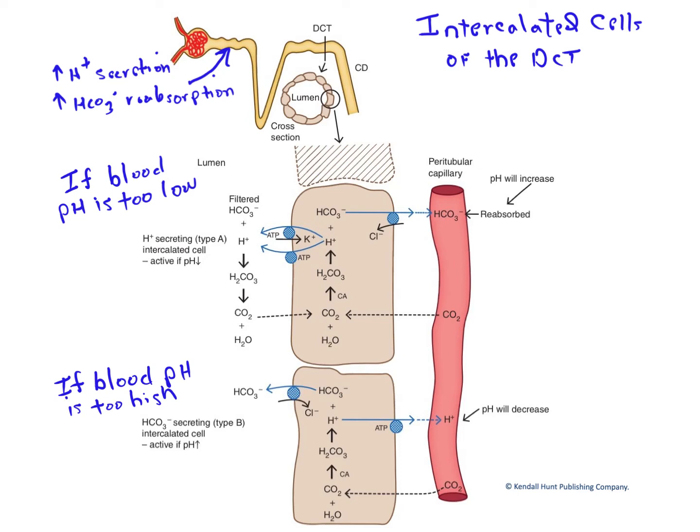It turns out that specialized intercalated cells in the wall of the distal convoluted tubule also play an important role in renal control of blood pH.